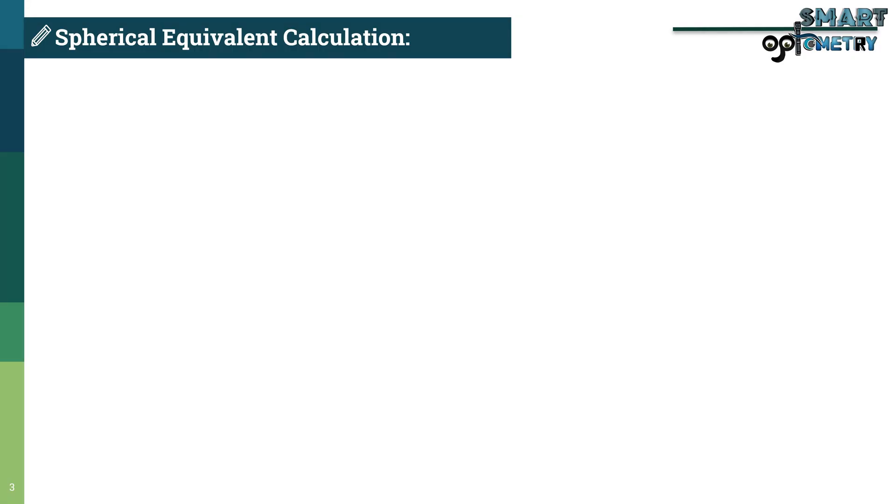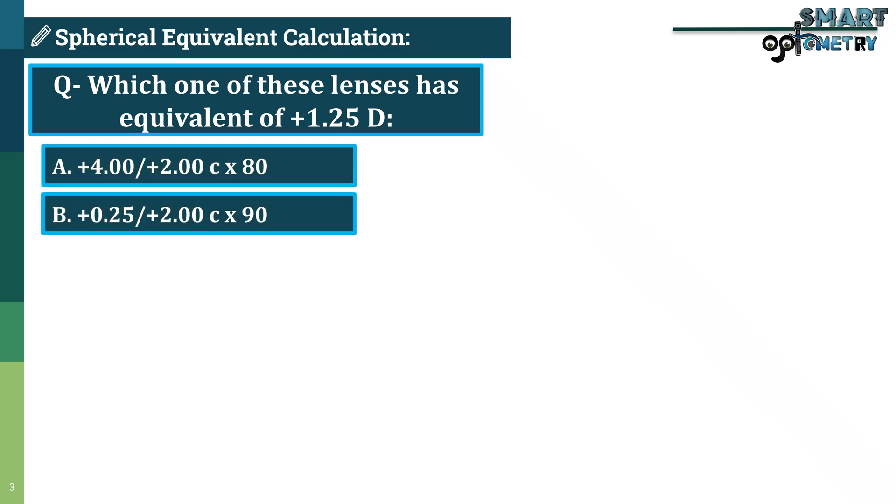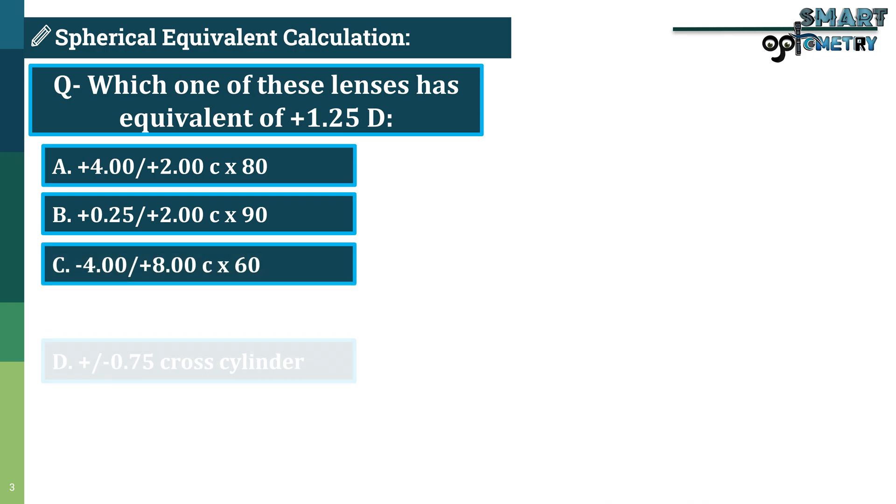Now, let's look at today's question. Which one of these lenses has a spherical equivalent of plus 1.25 diopters? Option A. Option B. Option C. Option D.